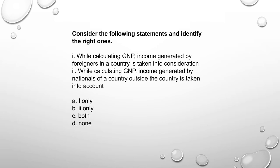Next: Consider the following statements and verify the right ones regarding GNP — Gross National Product. Income generated by foreigners in a country is taken into consideration for GDP, not GNP. While calculating GNP, income generated by nationals of a country outside the country is taken into account. So only statement 2 is correct — option 2 only.